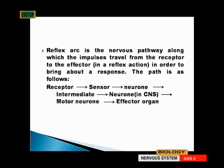The reflex arc goes as follows: from the receptor, it goes to the sensory neuron, then to the intermediate neuron, then to a neuron in the central nervous system, then to the motor neuron, and finally to the effector organ. So the pathway is: receptor → sensory neuron → intermediate neuron → neuron in the CNS → motor neuron → effector organ.